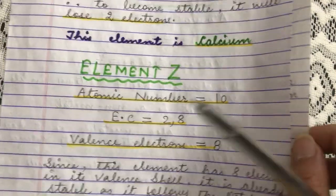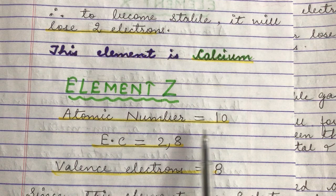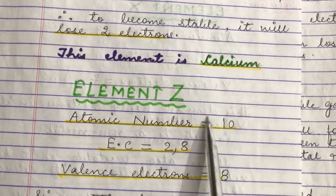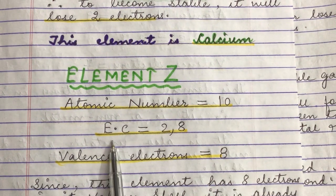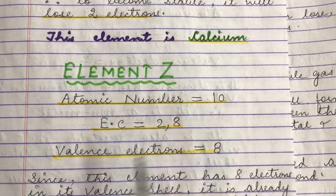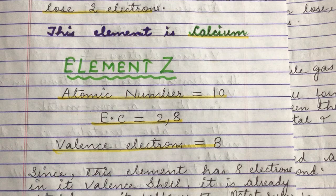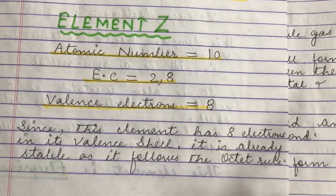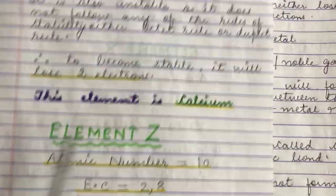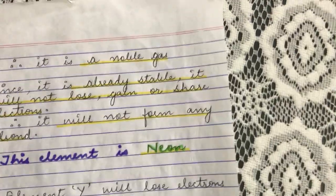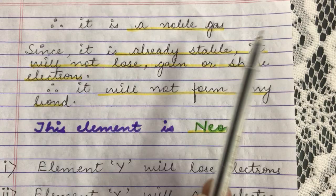Element Z has an atomic number of 10, so the number of electrons in Z is also 10. Therefore, its electronic configuration is 2,8. The number of valence electrons is clearly 8. Any element having 8 electrons in the outer shell is following the octet rule, which tells us this element is a stable atom. Therefore, this is a noble gas.